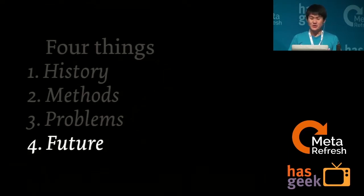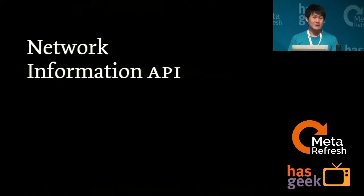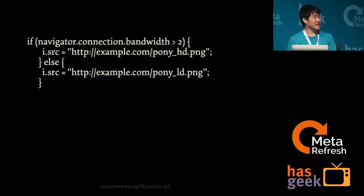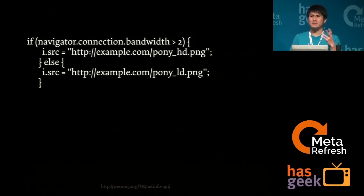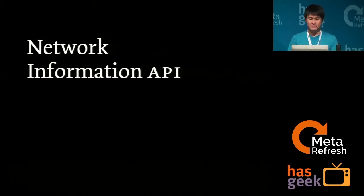The next section is the future — I'll cover two things briefly. First, the Network Information API: a relatively new W3C proposal that lets you target different bandwidths. You can say: 'if the connection bandwidth is more than 2 megabytes, show the HD image; if less, show a lower quality image.' It's similar to retina targeting in CSS. It might be implemented in Chrome Canary. It can also detect whether a connection is offline, which would be great in CSS.